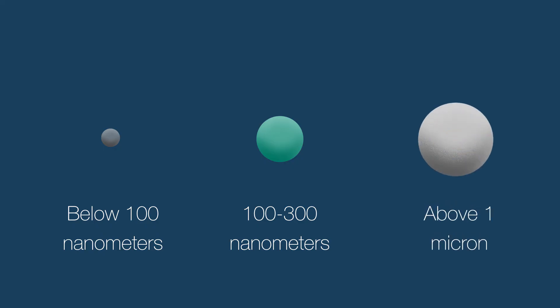Emulsions with DV50 below 100 nanometers will be transparent to semi-transparent. Emulsions from 100 nanometers to approximately 300 nanometers will be opaque with a blue tint. Above 1 micron will be opaque in shades of white.